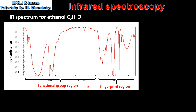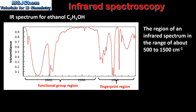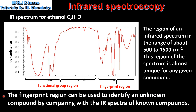The infrared spectrum can be divided into two regions. On the right we have the fingerprint region, on the left we have the functional group region. The fingerprint region is the region of an infrared spectrum in the range of about 500 to 1500 cm⁻¹. This region of the spectrum is almost unique for any given compound, and can be used to identify an unknown compound by comparing with the infrared spectra of known compounds.